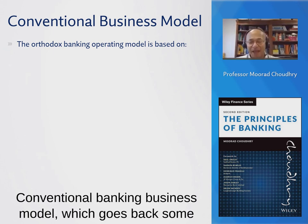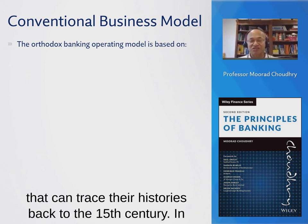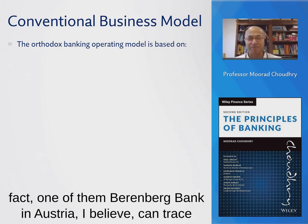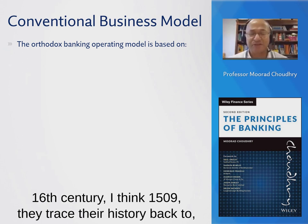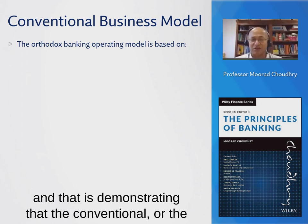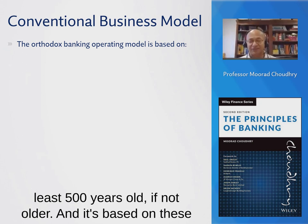The conventional banking business model goes back some years. You could point to a couple of institutions in Europe that can trace their histories back to the 15th century. In fact, Berenberg Bank can trace its origins back in its current form to the beginning of the 16th century — around 1509. This demonstrates that the conventional or orthodox banking operating model is not recent; it's at least 500 years old.